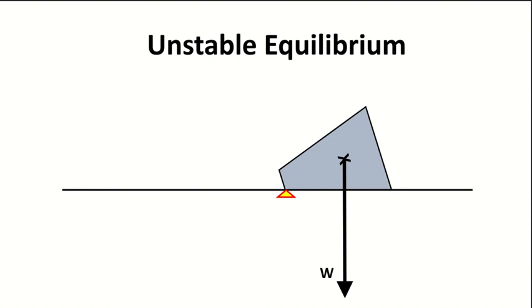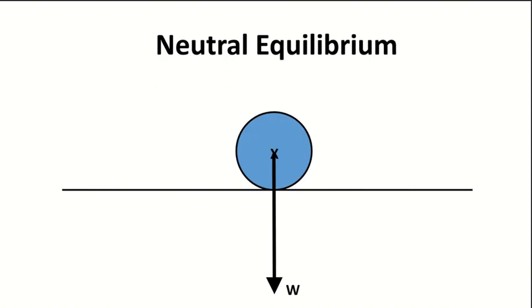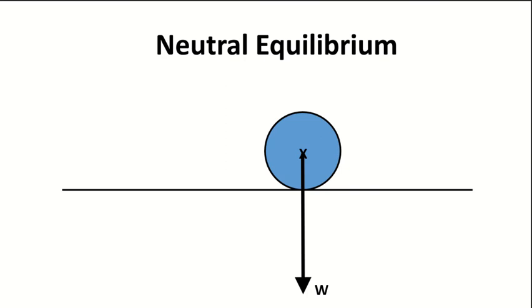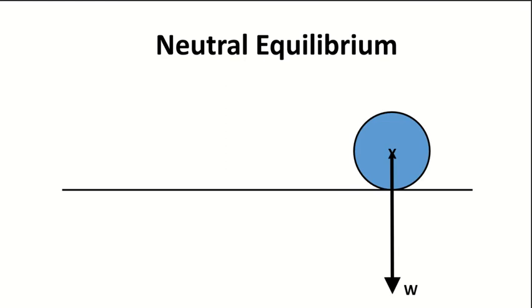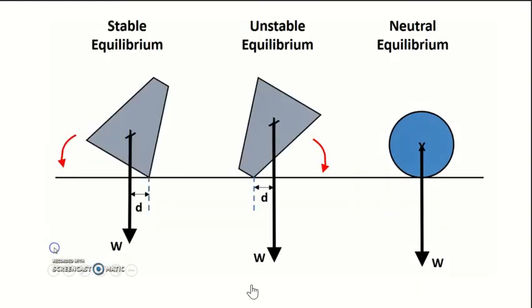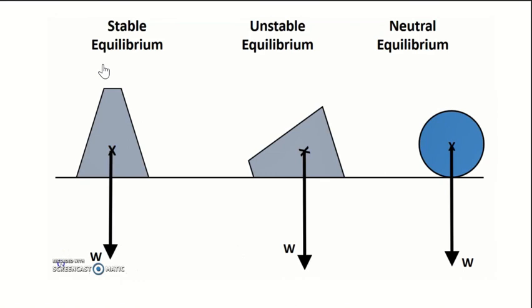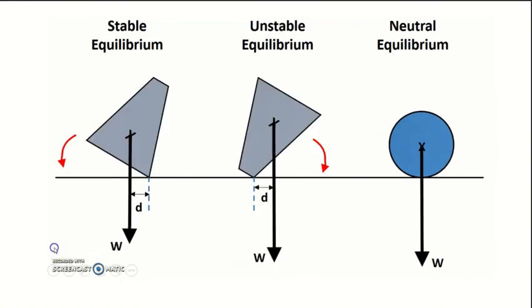So there is actually a third type of equilibrium over here, which is a neutral equilibrium. So neutral equilibrium, what happens is that if you move anywhere, it will just stay where it is.